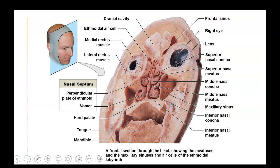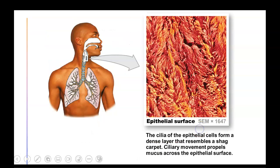Looking at a frontal or coronal cut, you can see what the nasal concha actually look like — a scroll-like structure that increases surface area. Looking at the ciliated epithelial surface inside the respiratory tract, you can see how the cilia work in a sweeping, wave-like motion.